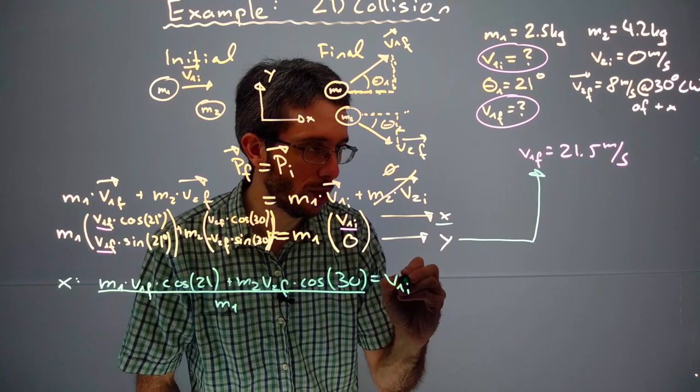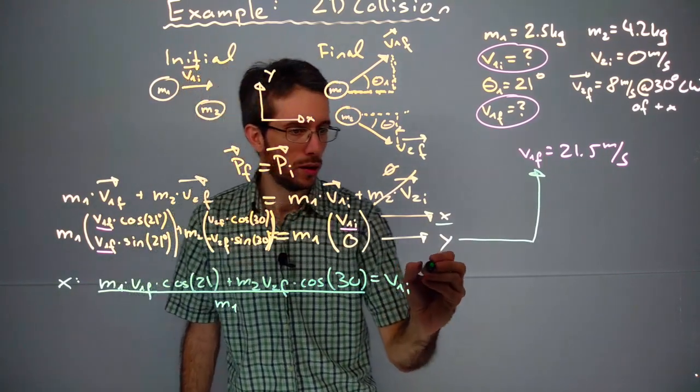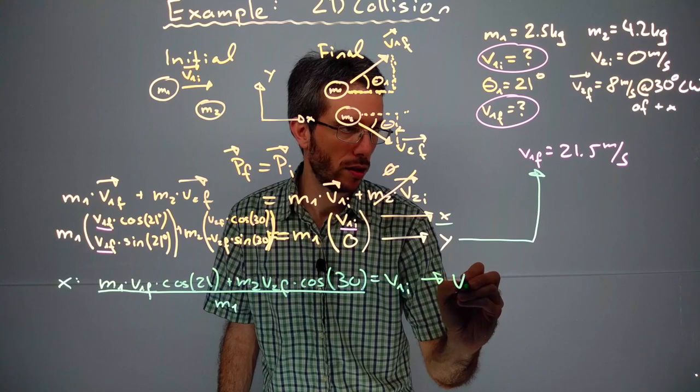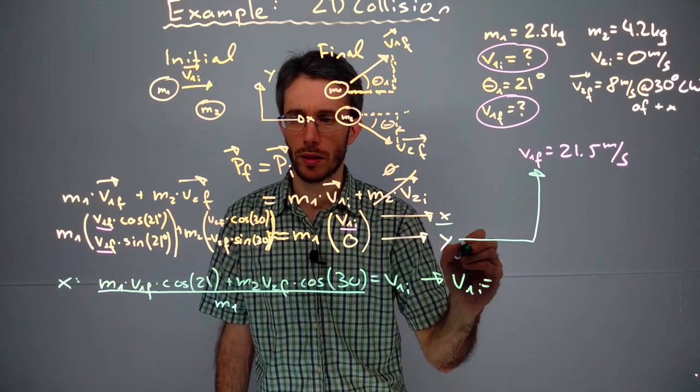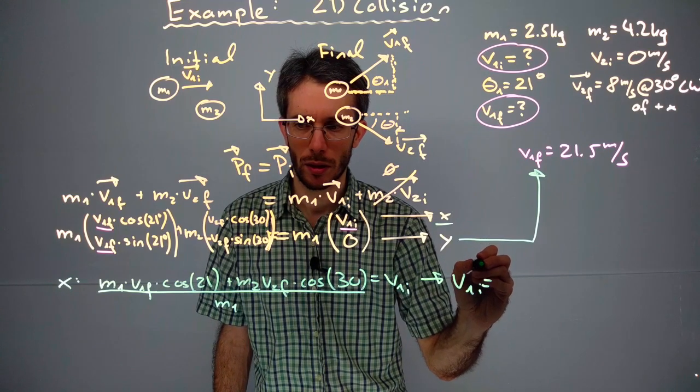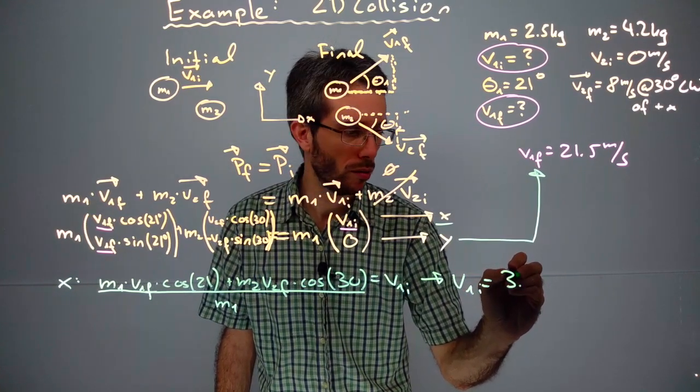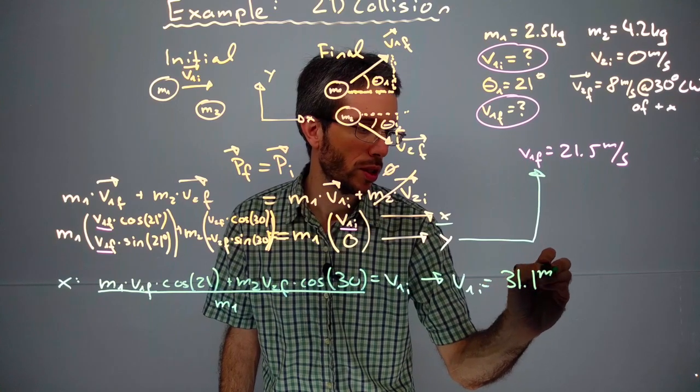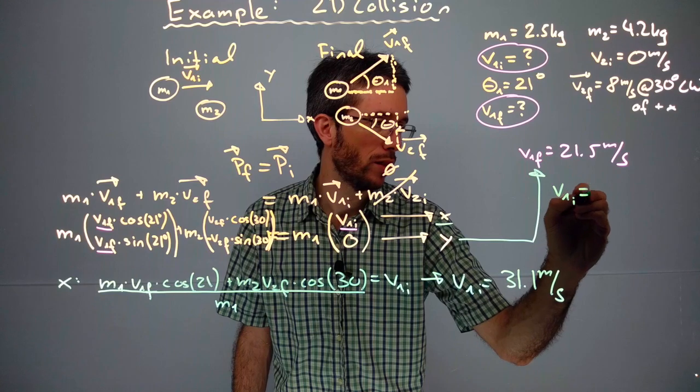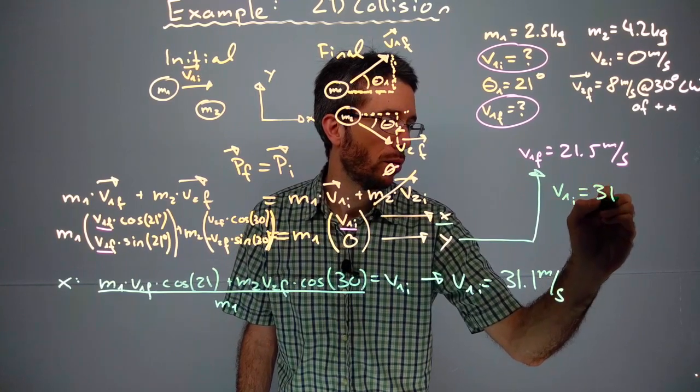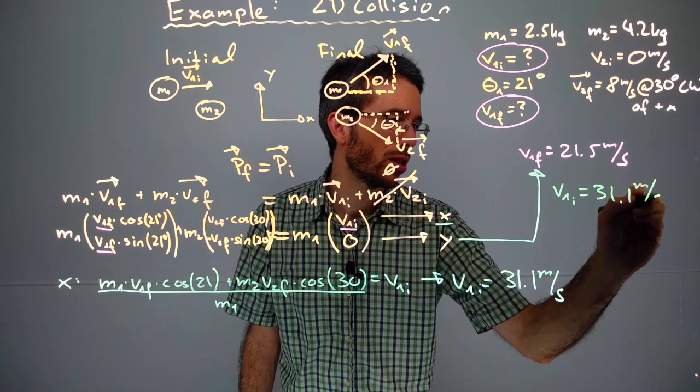I just divide by m1, so I have all of this divided by m1, which gives me v1 initial, which is 31.1 meters per second.